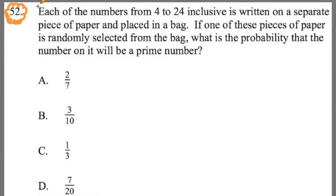So I'll start by reading it over and then we'll organize the information and talk about how to solve it. Number 52. It says, each of the numbers from 4 to 24 inclusively is written on a separate piece of paper and placed in a bag. If one of these pieces of paper is randomly selected from the bag, what is the probability that the number on it will be a prime number? Read that to yourself. Read this question to yourself.